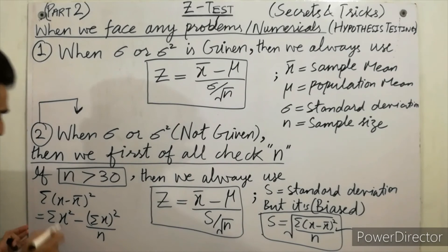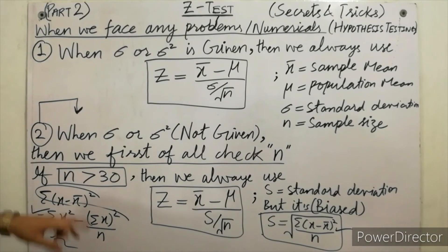You don't need to make a table to calculate that. Just use this formula to calculate the value of Σ(x - x̄)².